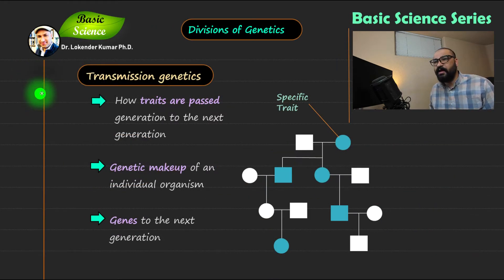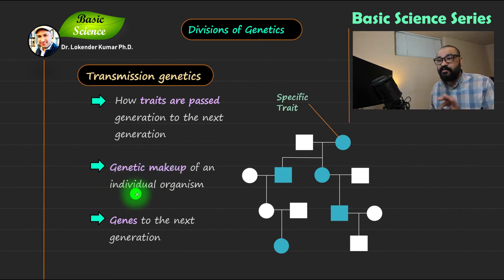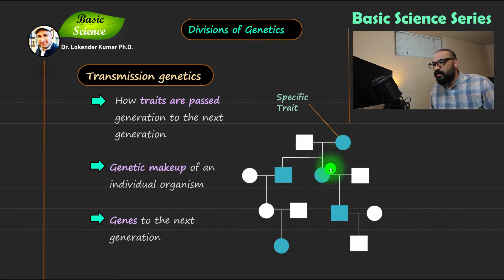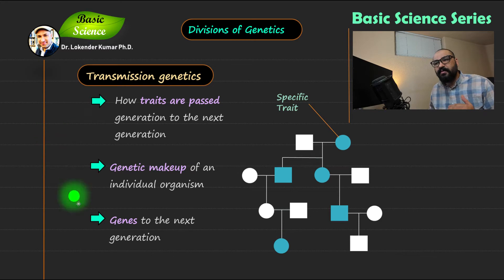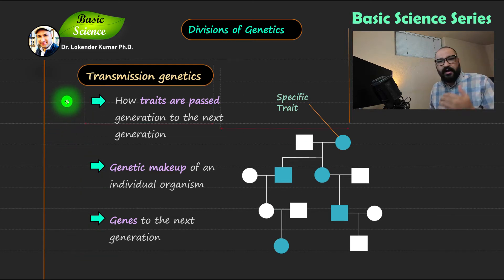This is my first slide where I'm discussing some important points in the case of transmission genetics. Point number one is how traits are passed from one generation to another. The second important point is the genetic makeup of the individual organism — in this case, we are more focused on the individual organism. As you can see, I have made a pedigree analysis chart showing how one particular specific trait is getting transmitted to the next generation. The third important point is how that particular gene is transferred and how it is functioning in the next generation. That is the part of transmission genetics.